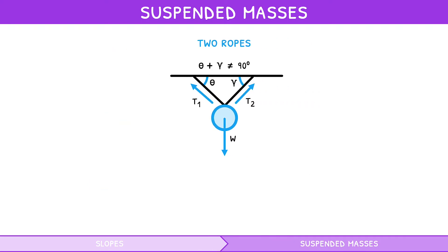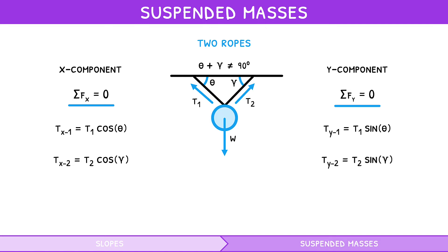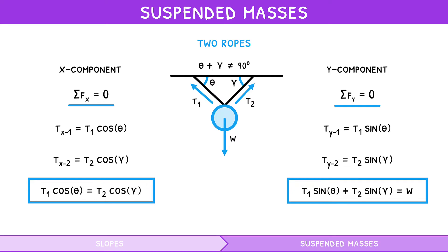What if theta and gamma do not equal 90 degrees? In this case, the forces are more difficult to relate, so the tension forces are broken into their x and y components. Since the suspended mass is at static equilibrium, the sum of x-direction forces is zero and the sum of y-direction forces is zero. Tension x1 equals tension 1 times cosine theta, and tension x2 equals tension 2 times cosine gamma. Tension y1 equals tension 1 times sine theta, and tension y2 equals tension 2 times sine gamma. Therefore tension x1 must equal tension x2, and tension y1 plus tension y2 must equal weight. From this system of equations, the two tension forces can be found.